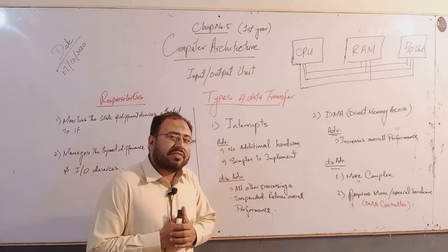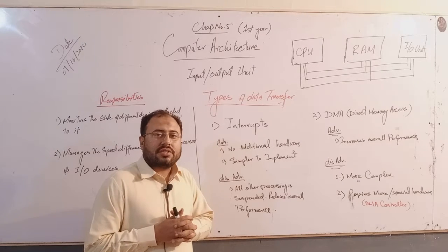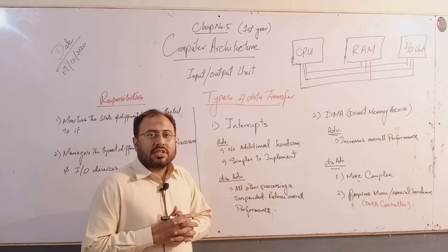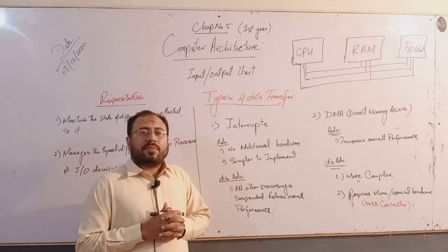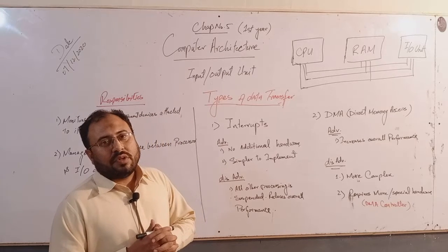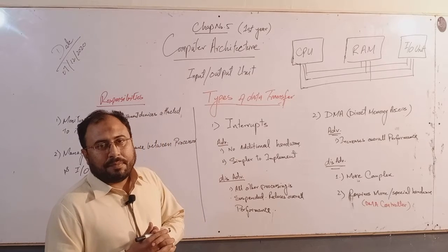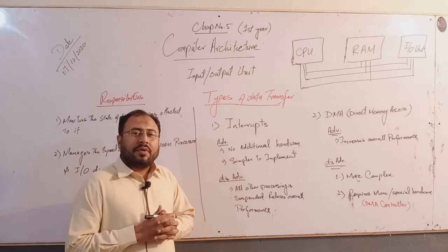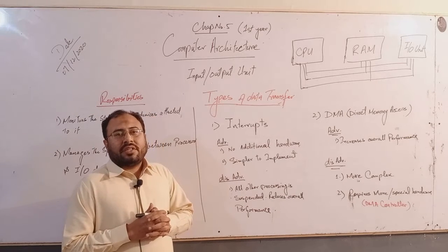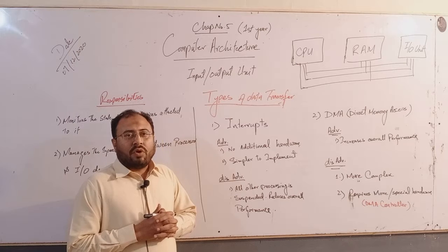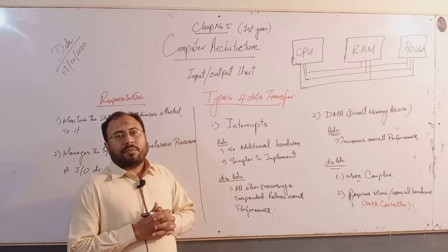Previously we have studied about computer architecture, John von Neumann theory, CPU and its parts — ALU, CU — RAM, ROM, dynamic RAM and static RAM, and similarly ROM types: PROM, EPROM, and EEPROM.